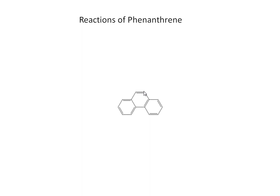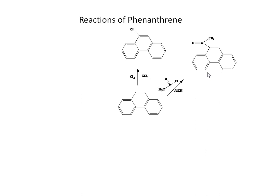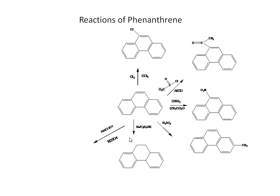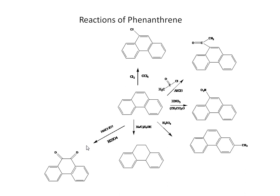Reactions of phenanthrene follow the same pattern: chlorination to give 9-chlorophenanthrene; acetylation to give 9-acetylphenanthrene; nitration to give 9-nitrophenanthrene; sulfonation to give beta-sulfonylphenanthrene; reduction to give perhydrophenanthrene; oxidation in presence of sodium dichromate to give 9,10-phenanthrenequinone. Summary: chlorination, acetylation, nitration, sulfonation, reduction, oxidation.